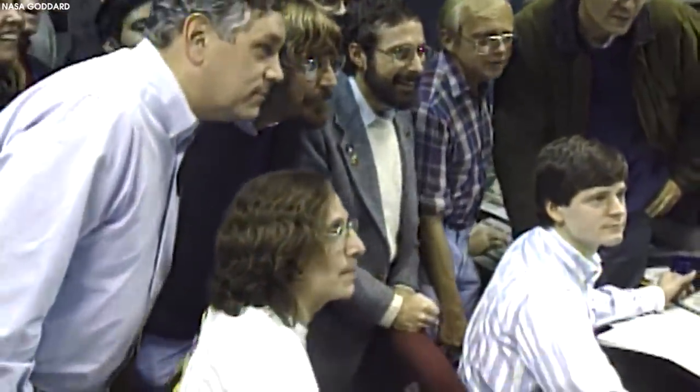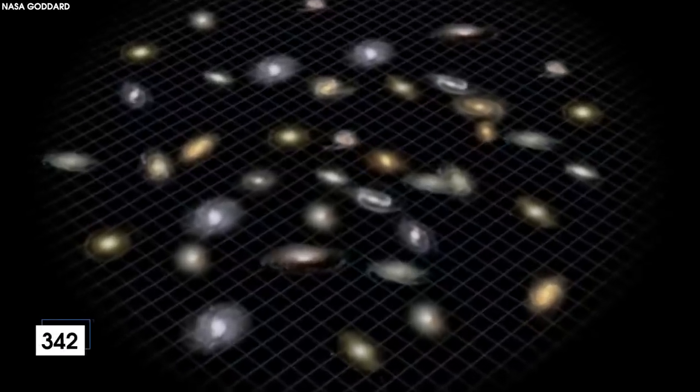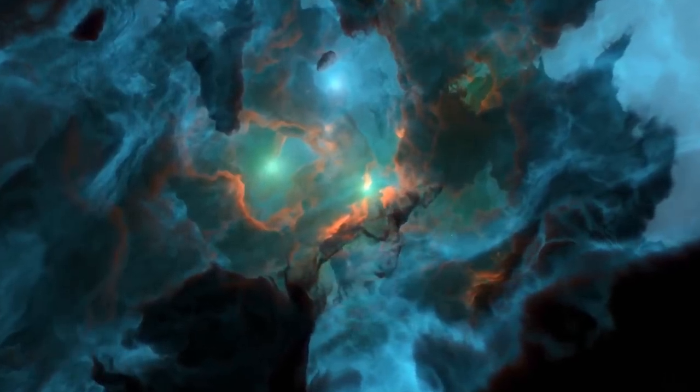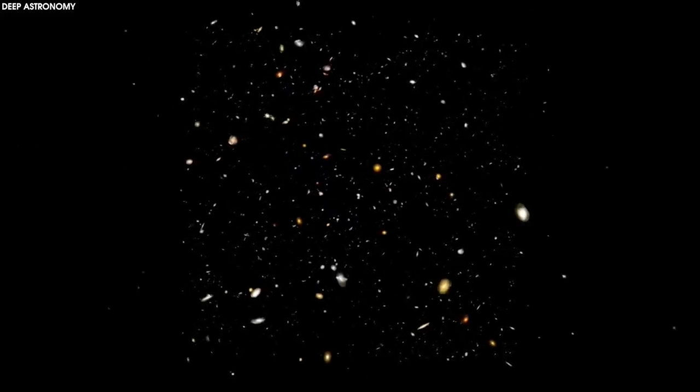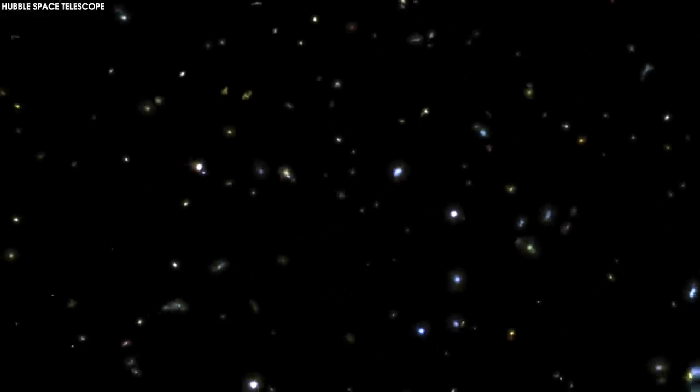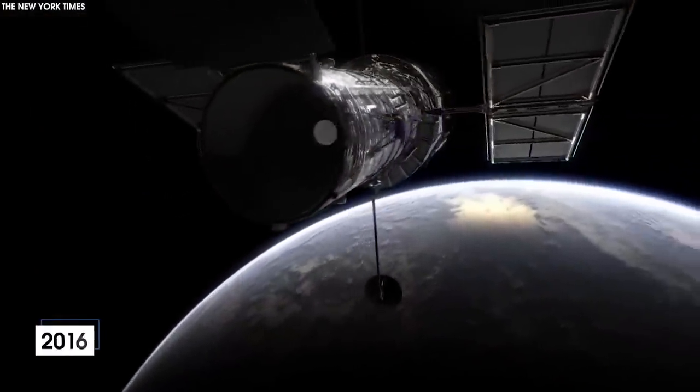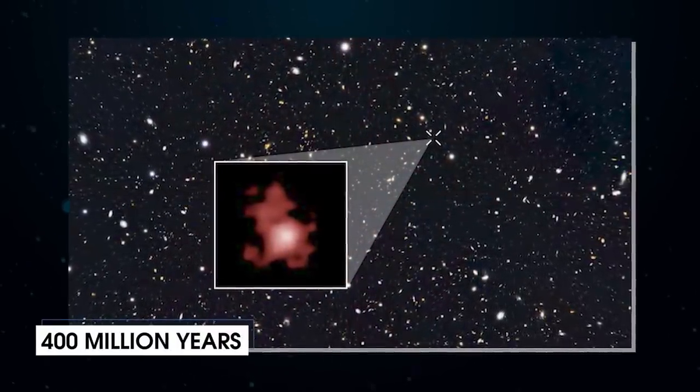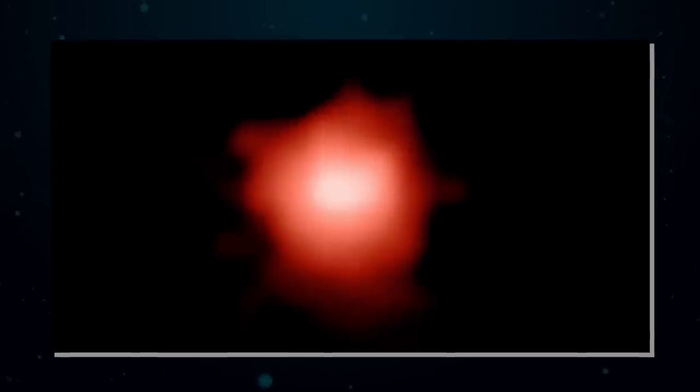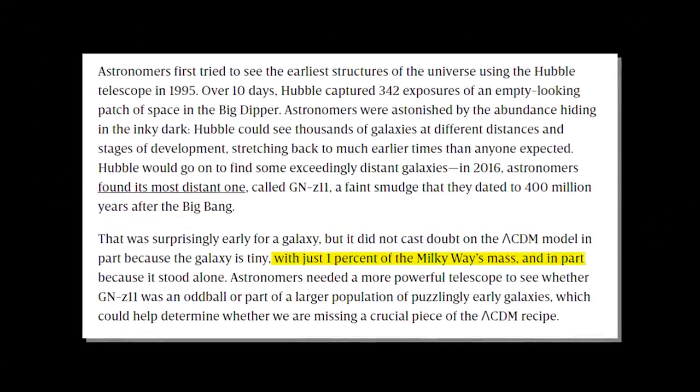Astronomers first tried to see the earliest structures of the universe using the Hubble telescope in 1995. Over 10 days, Hubble captured 342 exposures of an empty-looking patch of space in the Big Dipper. Astronomers were astonished by the abundance hiding in the inky dark. Hubble could see thousands of galaxies at different distances and stages of development, stretching back to much earlier times than anyone expected. Hubble would go on to find some exceedingly distant galaxies. In 2016, astronomers found its most distant one called GNZ11, a faint smudge that they dated to 400 million years after the Big Bang. That was surprisingly early for a galaxy, but it did not cast doubt on the ΛCDM model in part because the galaxy is tiny, with just one percent of the Milky Way's mass, and in part because it stood alone.